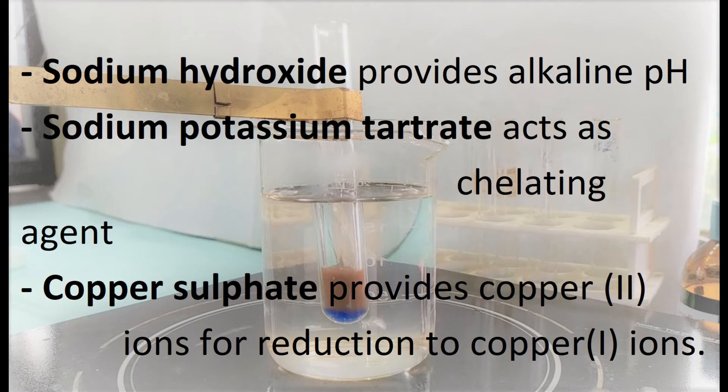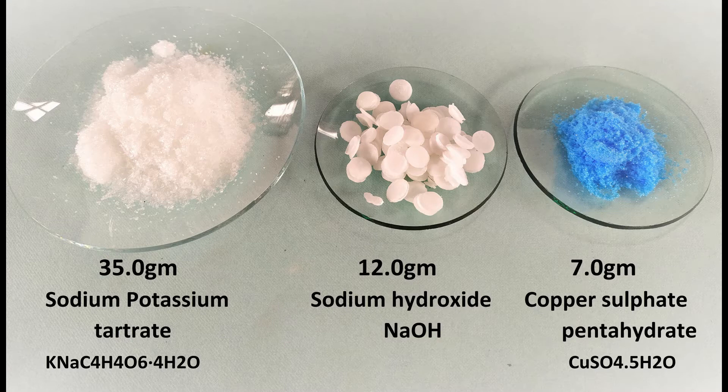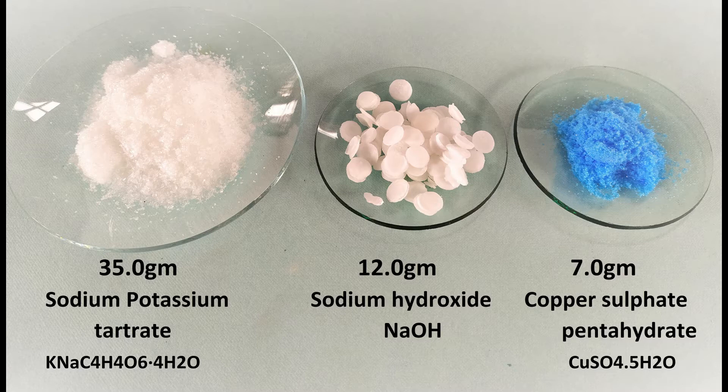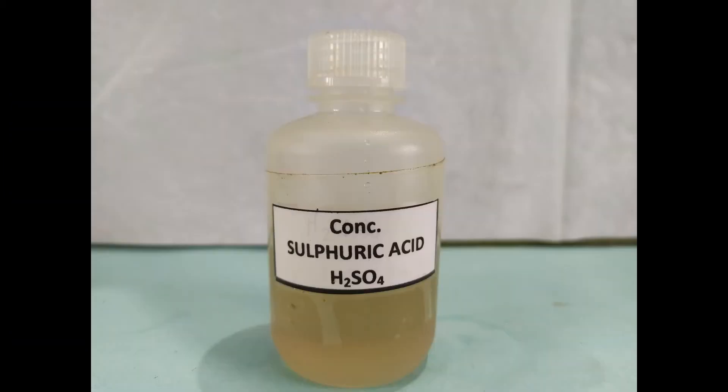To prepare Fehling's reagent, you'll need the following: 7 grams of copper sulfate pentahydrate, 35 grams of potassium-sodium tartrate, 12 grams of sodium hydroxide, distilled water, and concentrated sulfuric acid.